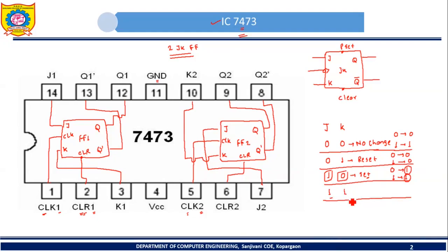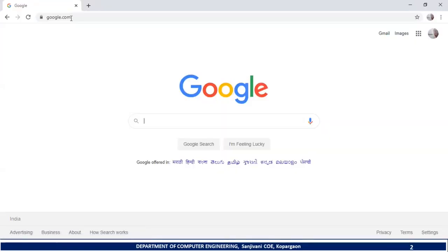In JK flip-flop, if both inputs are 1, JK flip-flop will toggle. If the present state is 0, it will become 1; if the present state is 1, it will become 0. This is the operation of JK flip-flop.